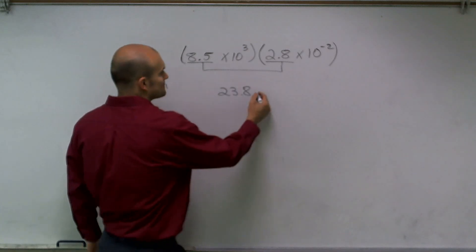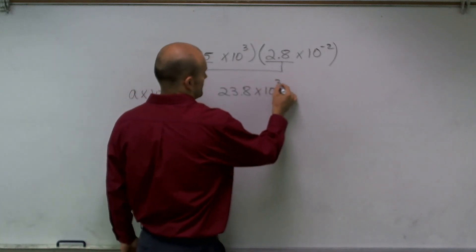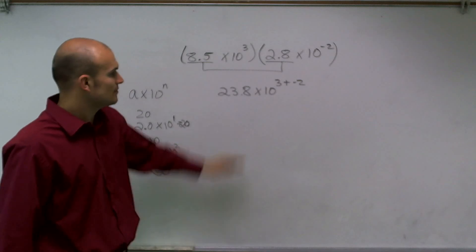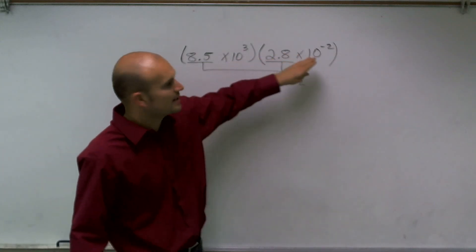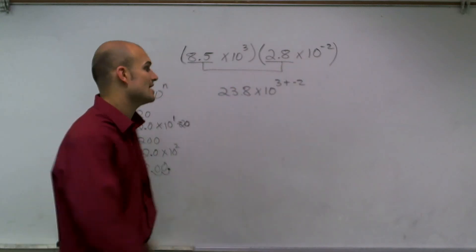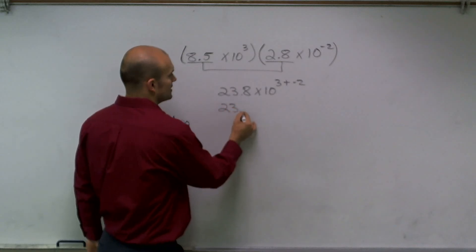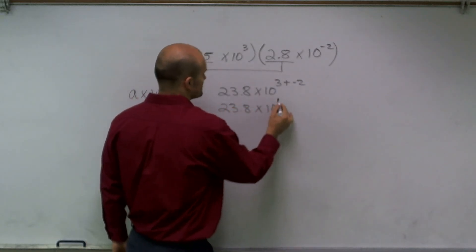Remember, when you multiply exponents—when you multiply numbers with the same base and exponents, you add the exponents. So therefore, I get 23.8 times 10 to the first power.